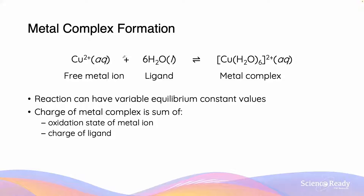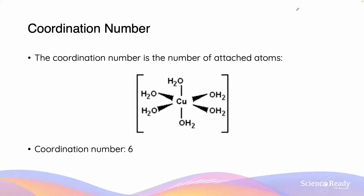Here is an example of a metal complex formation reaction. Copper 2+ reacts with six H₂O ligands in order to form the metal complex copper hexahydrate. Metal complex reactions can have a variety of equilibrium constant values. The charge of the metal complex is also calculated by taking the sum of the oxidation state of the metal ion plus the charge of the ligand. Since the ligand has a charge of zero, six times zero plus two equals two, hence why the metal complex has a charge of 2+. Metal complexes also have a coordination number, which is simply the number of atoms attached to the metal ion. In this case there are six coordinate covalent bonds formed, so the coordination number is six.